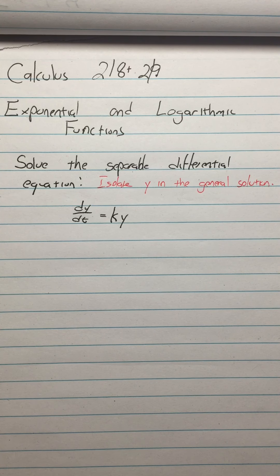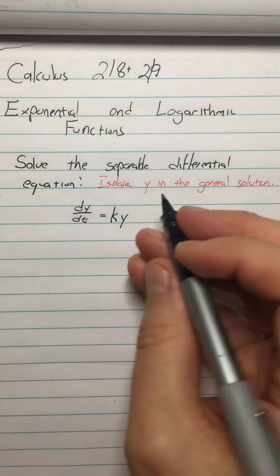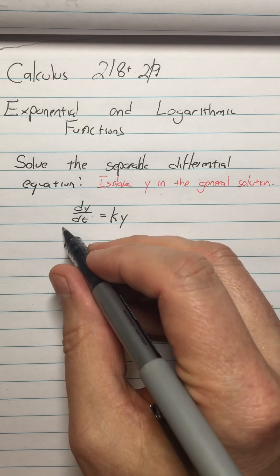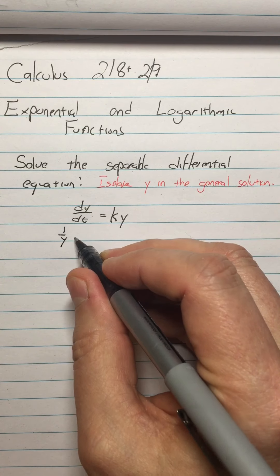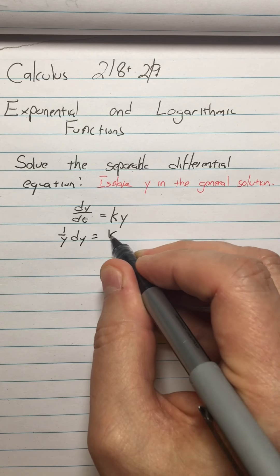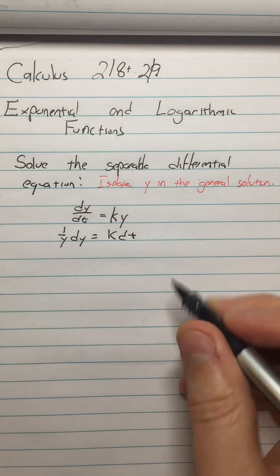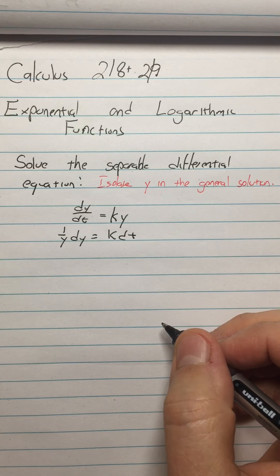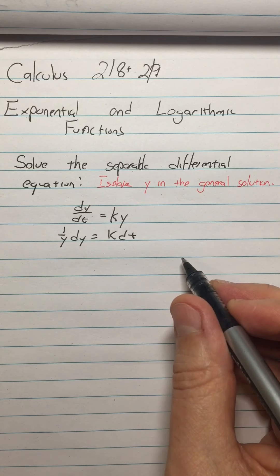Okay, hopefully you're back having done that. So how do we solve this? We have to bring the Y over, so we're gonna have 1 over Y dy equals K dt. Then we're gonna anti-differentiate with respect to Y on this side, and T on this side.